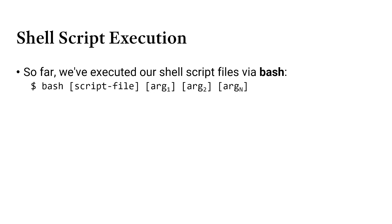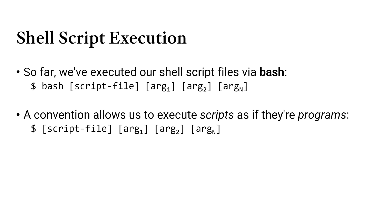What we just saw was the ability to use the bash program to execute a script file, giving the script file's name as the first argument to bash, with subsequent arguments passed to the script. This works generically for any script file written in the bash command line language. But it turns out there's another way to run our scripts — a convention that makes them feel like actual binary programs, just like bash, grep, cat, or echo, where from a user's vantage point you cannot discern whether it's a script or a full-fledged binary program.